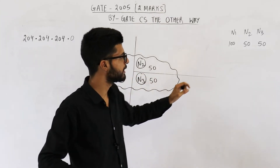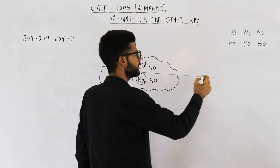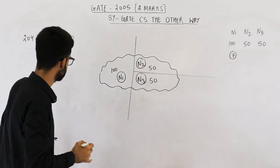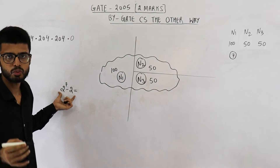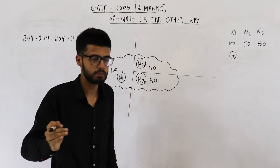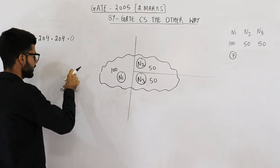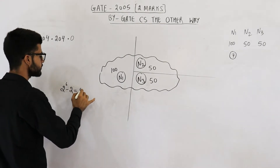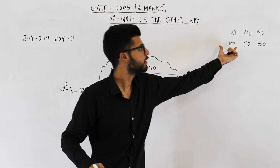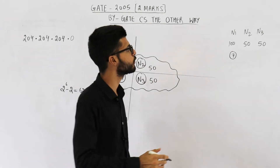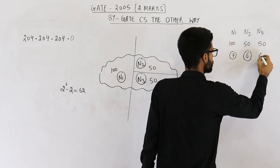Let's determine the minimum number of bits required in the host ID part for each network. For N1, we need 7 bits, because with 7 bits the maximum hosts are 128 minus 2, which is 126. Since we need 100, 7 bits works. With only 6 bits, the maximum would be 62, which is insufficient for 100 hosts. However, 6 bits is sufficient for N2 and N3, which need only 50 hosts each.